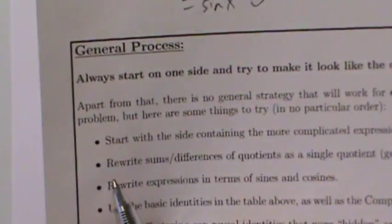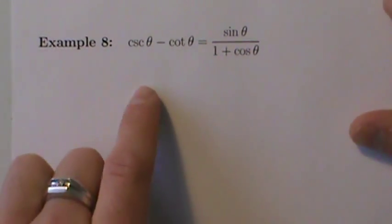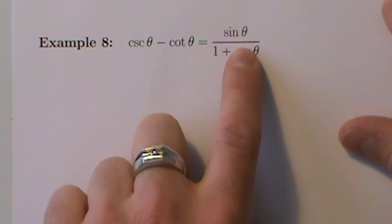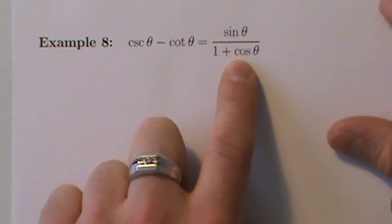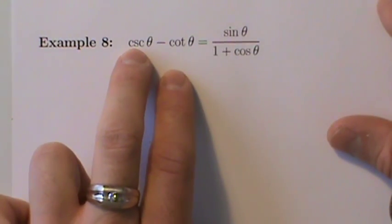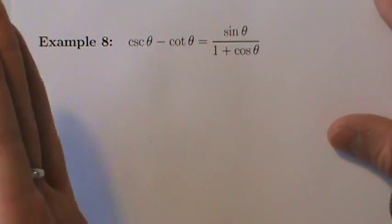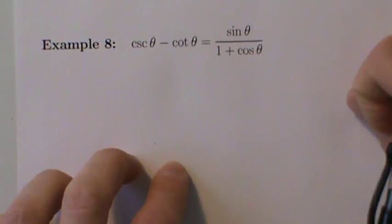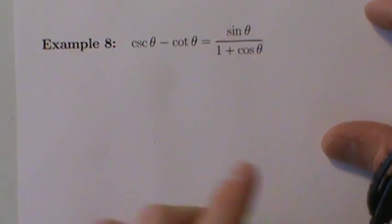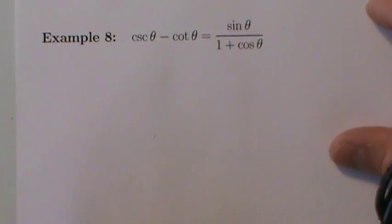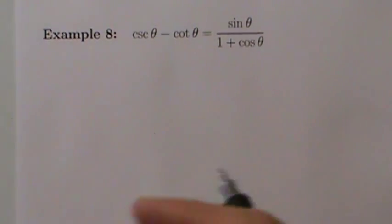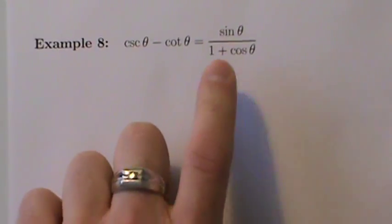Generally, start with the side containing a more complicated expression. The left side is just a subtraction, but the right side has addition and division, so it's a little more complicated. However, cosecant and cotangent are also complex. We're going to do this example two ways: first starting on the right side to show it equals the left, then doing it again starting from the left.